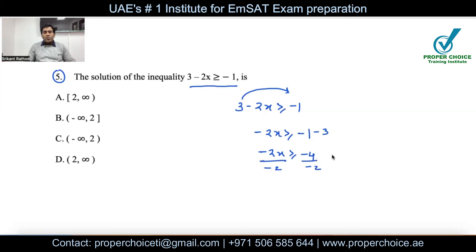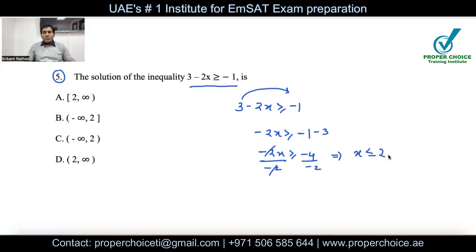We divide both sides by −2. The most important rule about inequalities: when you multiply or divide by a negative number, the inequality sign must be flipped. So ≥ becomes ≤. The result is x ≤ −4 ÷ −2 = 2. So x ≤ 2. Now, which answer option represents this? They've given the answer in interval notation.